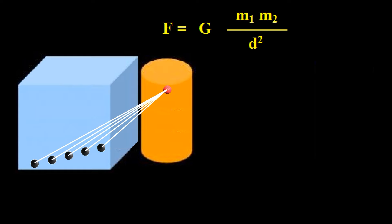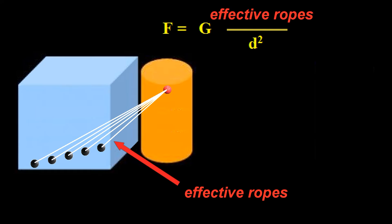Under the rope model of gravity, each rope is now acting independently. We refer to the ropes that act independently as effective ropes. The strength of gravity is a measure of the number of effective ropes, which is inversely proportional to distance.